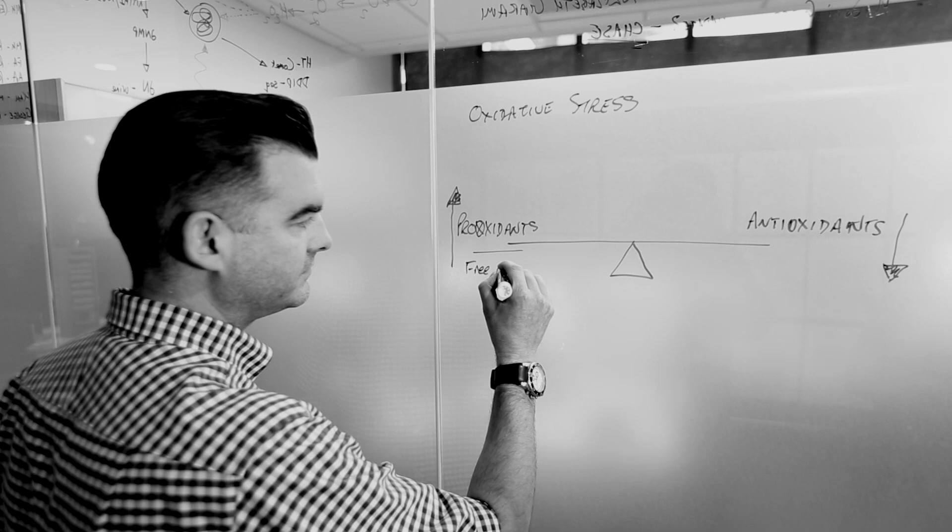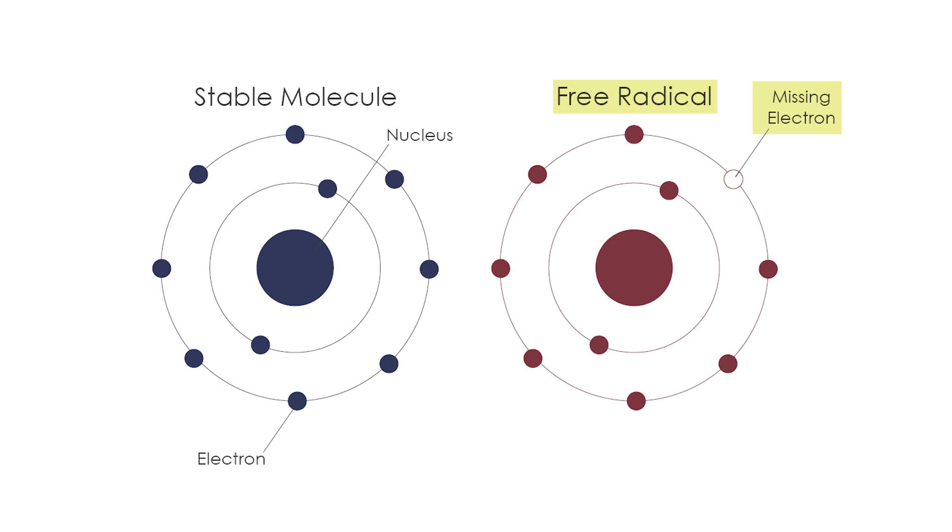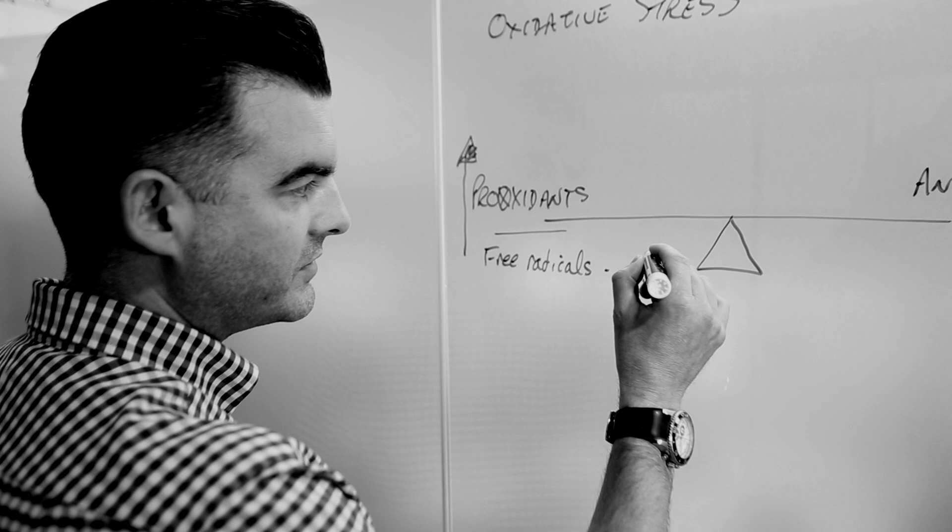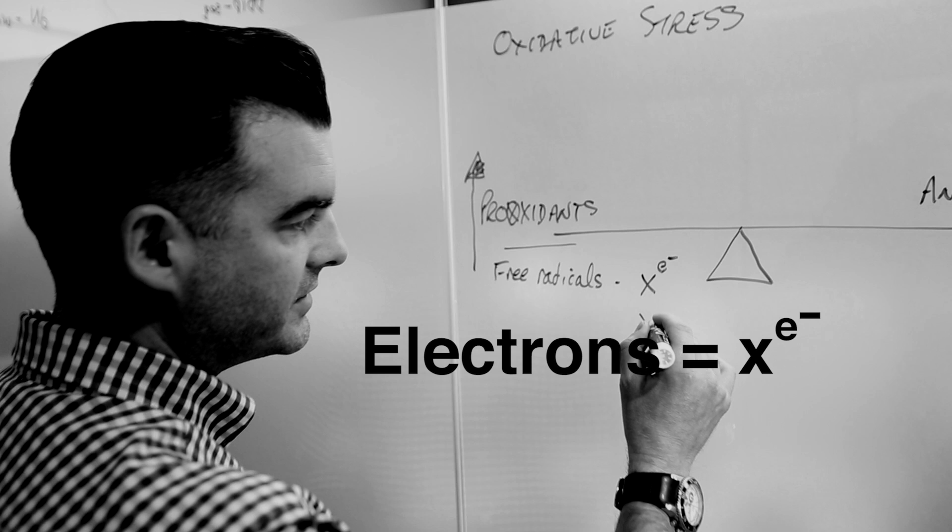free radicals. Free radicals are chemicals with an unpaired electron. Normally electrons are paired; when they're unpaired they become highly reactive. So it'll be a compound X with an electron on it, and